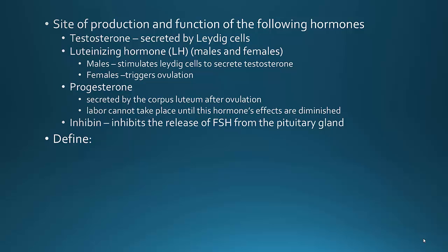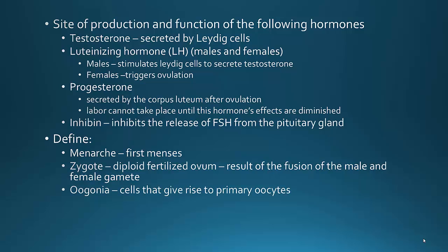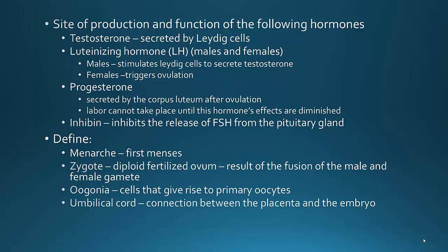Some definitions you also need to know: Menarche is the first menses. A zygote is a diploid fertilized ovum — a fertilized egg resulting from the fusion of the male and female gamete, the fusion of an egg and a sperm. Oogonia are the cells that give rise to primary oocytes — kind of like the egg stem cells. The umbilical cord is the connection between the placenta and the embryo; it delivers nutrients and removes waste back to the mother.